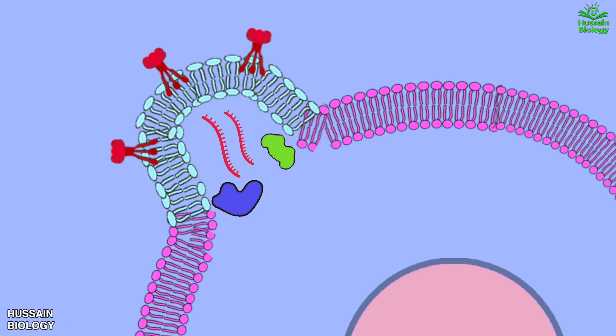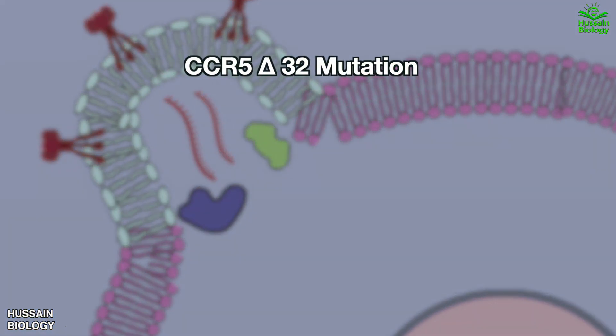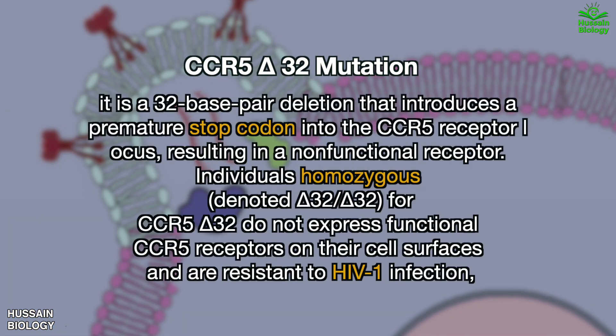Before we proceed to the replication process, we have something to remember: the CCR5 Delta 32 mutation. It is a 32 base pair deletion that introduces a premature stop codon into the CCR5 receptor locus, resulting in a non-functional receptor. Individuals homozygous for CCR5 Delta 32 do not express functional CCR5 receptors on their cell surfaces and are resistant to HIV-1 infection.